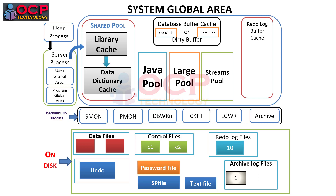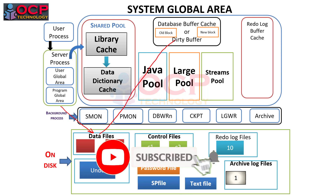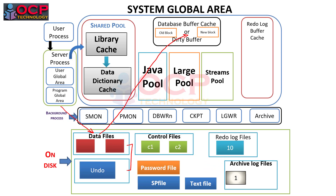Once the query is executed, the server process goes into the data files and finds the particular record for employee ID 108. That block is copied into the database buffer cache, and at the same time a copy of that particular block also goes into the undo segment.